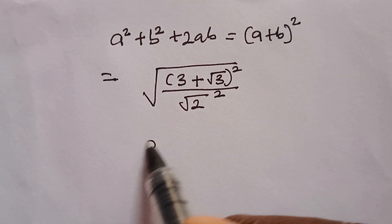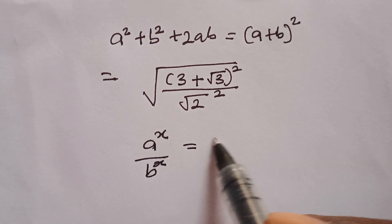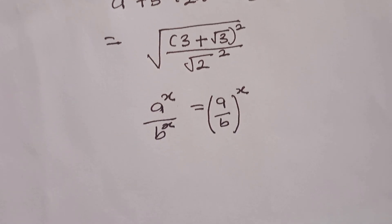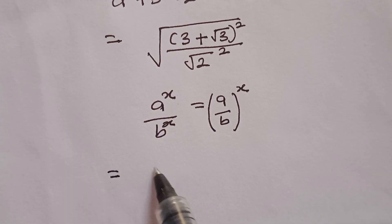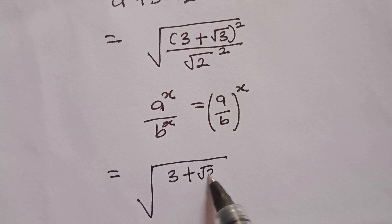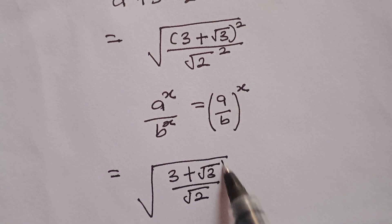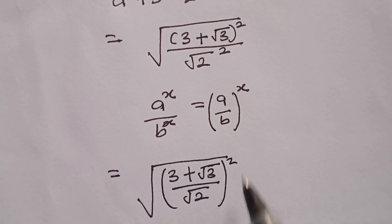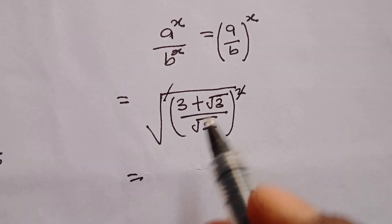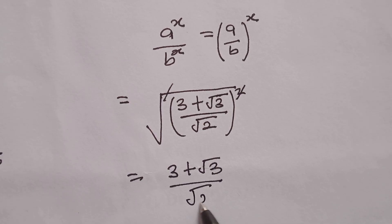On getting to this stage, if you have a raised to x divided by b raised to x, you can factorize out the power and write it as a divided by b, everything raised to x. Applying this to what we have inside our square root, we now have 3 plus square root of 3, everything divided by square root of 2, everything squared. This allows us to eliminate the square root, giving us 3 plus square root of 3, everything divided by square root of 2.